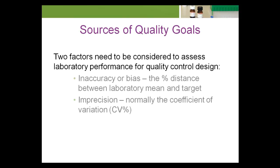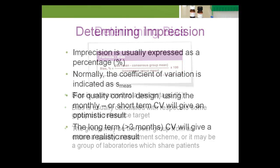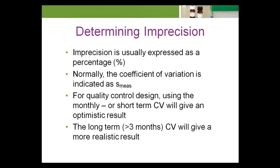The bias and imprecision for each test must be determined. Bias or inaccuracy can be thought of as the calibration difference between where a test is calibrated and where it should be calibrated. Imprecision is expressed as the coefficient of variation, or the analytical CV. In the technical literature, the analytical CV is frequently represented as S-measure.